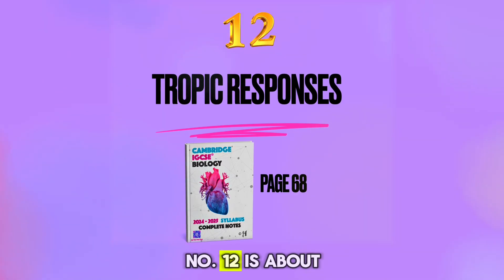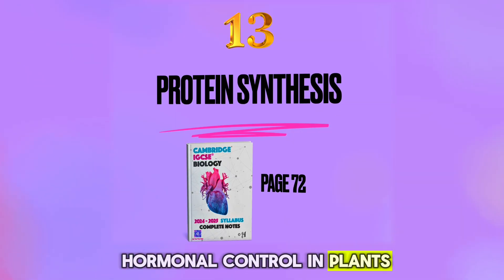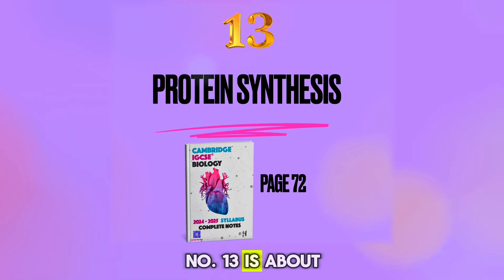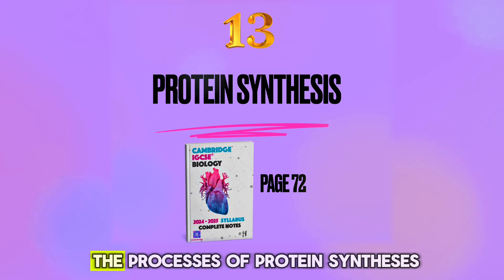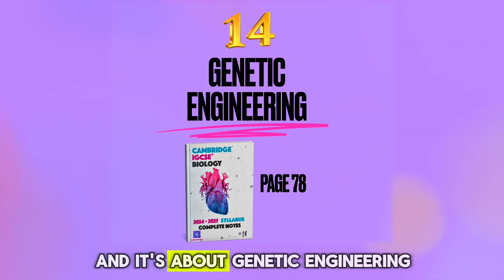Number 12 is about hormonal control in plants. Number 13 is about the process of protein synthesis. Number 14 is quite important and it's about genetic engineering.